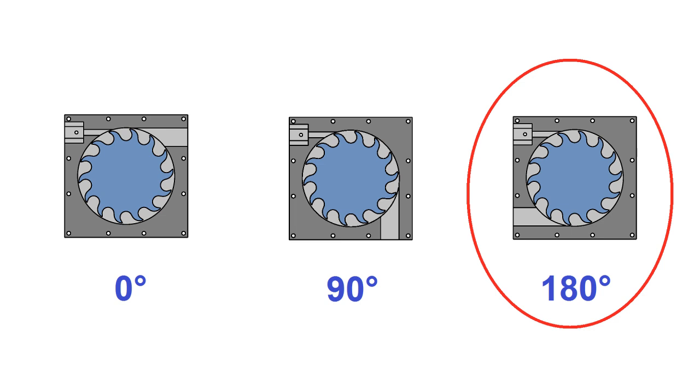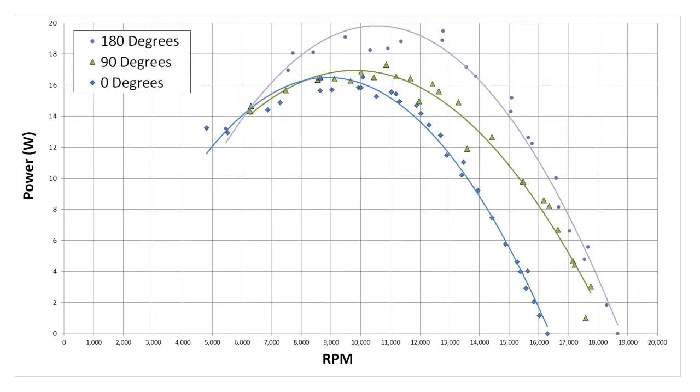However, as we just saw, my guess with the wider rotor turned out to be wrong, so I wanted to test this hunch to verify. Here's the results of that test. This time my intuition did turn out to be right, and the inlet to outlet angle actually did make a pretty big difference.